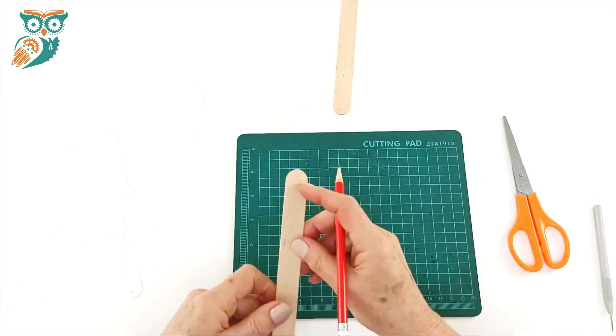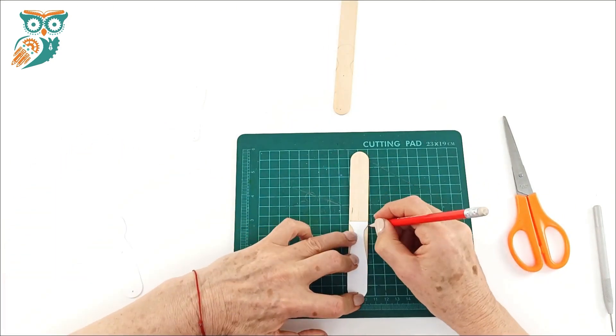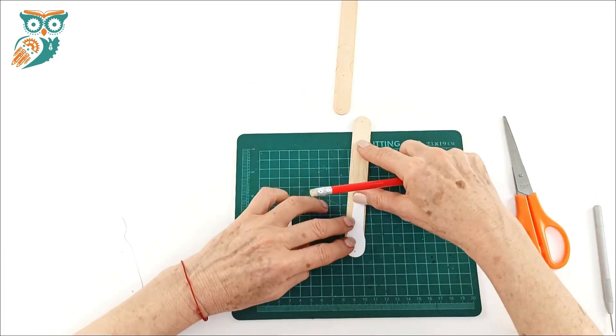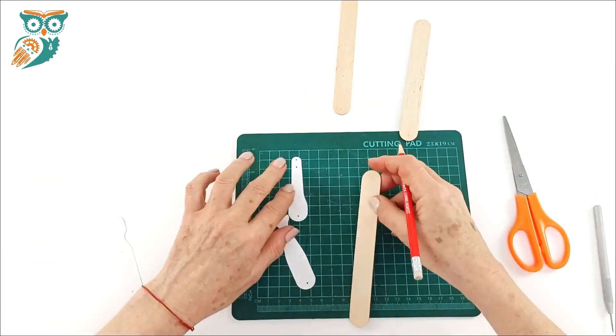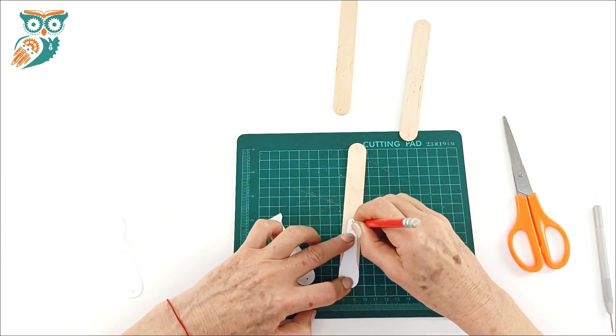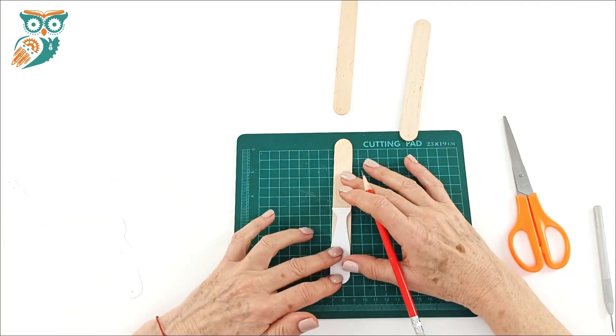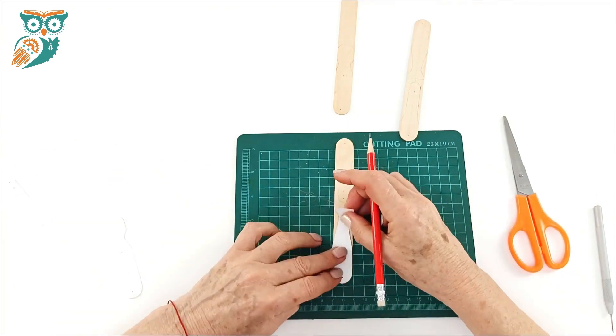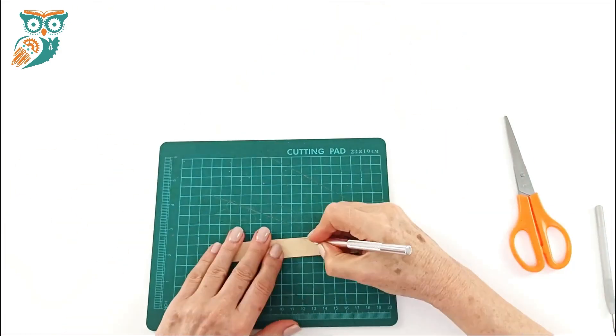We're going to take some jumbo craft sticks and make the body parts for our little acrobat first. We're tracing out the shapes of the arms, legs, and torso. The torso includes the head, and you can notice that we also have some dots there where we're going to be drilling some holes.